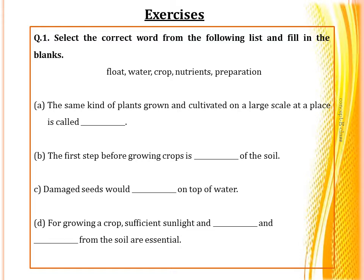The first question is: select the correct word from the following list and fill in the blanks. The same kind of plants grown and cultivated on a large scale at a place is called a crop. The second question: the first step before growing crops is dash of the soil. We know there are six agriculture steps for cultivation of crops, and the first step is preparation of soil.